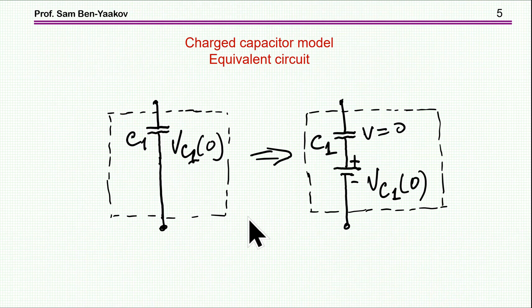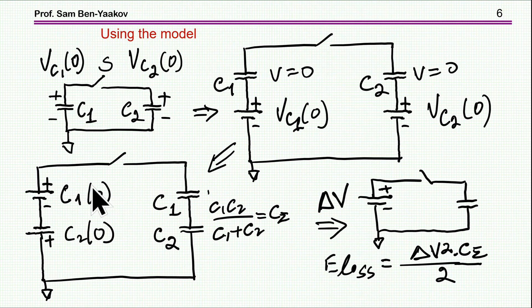Now, to deal with various cases of the charging-discharging process of capacitors and voltage sources, we can use an equivalent circuit of a charged capacitor which will be very helpful. If I have a capacitor charged to some voltage VC1 at time zero, I can represent it, for all practical purposes, by an equivalent circuit that has a capacitor plus a voltage source in series. From outside, you cannot distinguish between these two. This is absolutely equivalent from the electrical point of view.